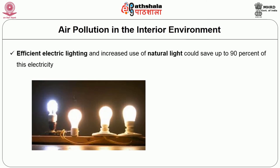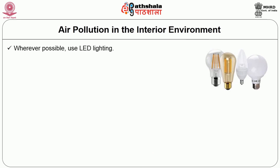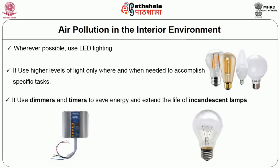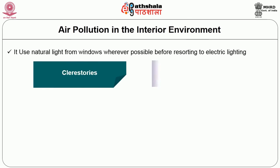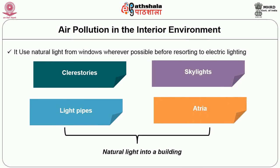Lighting and energy conservation: Efficient electric lighting and increased use of natural light could save up to 90% of electricity. Wherever possible, use LED lighting. Use higher levels of light only where and when needed to accomplish specific tasks. Use dimmers and timers to save energy and extend the life of incandescent lamps. Use natural light from windows wherever possible before resorting to electric lighting. Also consider clerestories, skylights, light pipes, and atria to bring natural light into a building.